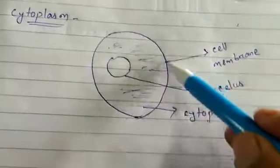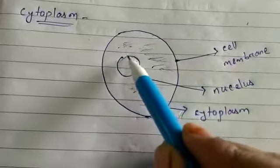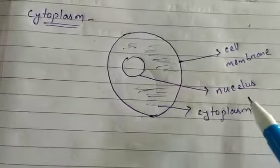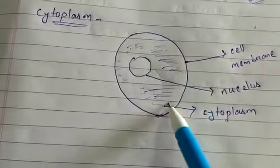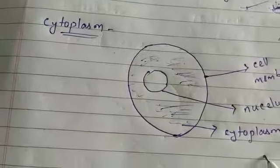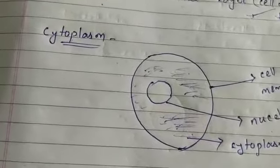The jelly-like substance present inside the cell membrane is known as the cytoplasm. Suppose this is a cell — the outer covering is known as the cell membrane, the spherical structure is known as the nucleus, and the jelly-like substance present inside the cell membrane is called cytoplasm.